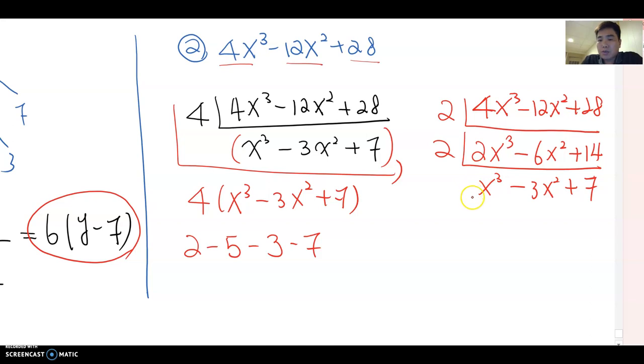Then please do by 2 again. So x³ minus 3x² plus 7. As you see, these three terms don't have any more common factor. Then now cover by parentheses and make multiplication form. Then this becomes 2 times 2 and (x³ minus 3x² plus 7). Therefore the answer becomes 4 times (x³ minus 3x² plus 7).